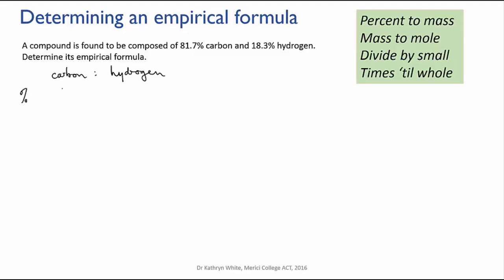The first step is then to convert the percentage into a mass in grams. This is dead easy. You just assume that you have a total mass of 100 grams and then the masses of the individual elements will be the same as their percentages. So now we have the mass ratio between the two elements.